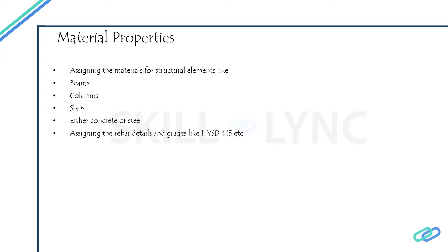For the column, we define the grade of concrete and the grade of steel. For the slab as well, we define the grade of concrete and the grade of rebar — in other words, Fe 415. For these three structural members, if it is a concrete frame structure, beams, columns, and slabs will fall under the concrete part. For a steel structure, all parameters will be steel — like IS LB, light beam, heavy beam, medium beam, and slabs.